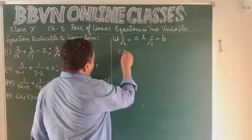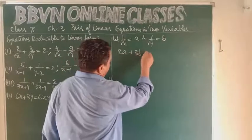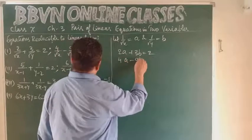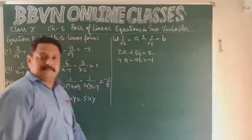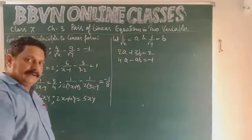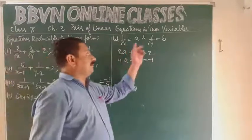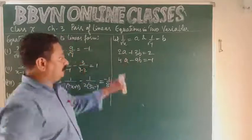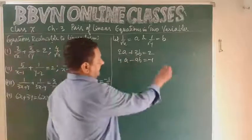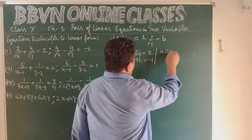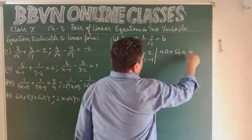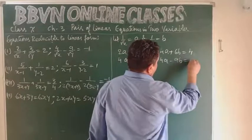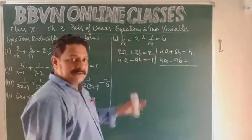Substituting, we get: 2a + 3b = 2 and 4a - 9b = -1 — a pair of linear equations. We solve for a and b, and then find x and y. To equalize the coefficients of a, multiply the first equation by 2: giving 4a + 6b = 4. The second equation remains as it is: 4a - 9b = -1.